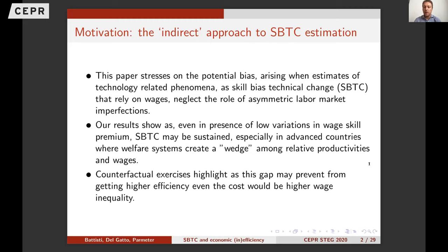This kind of gap is much bigger in advanced countries due to the welfare system. Our results and our alternative proposal show that even in the presence of low variation in the wage ratio, skill-based technical change may still be sustained — due to this gap created by asymmetric labor market imperfection. At the end, I'll show a couple of counterfactual exercises that highlight what happens to efficiency, productivity, or wage inequality if we eliminate this difference between productivity and the wage pattern.